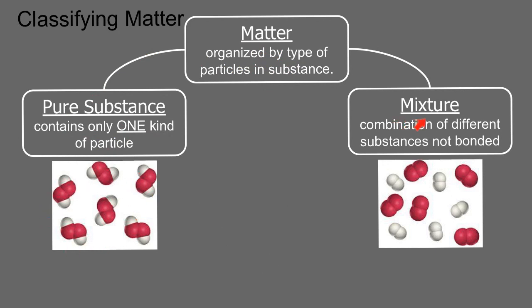The other thing would be a mixture. A mixture would be a combination of different substances not bonded together. So we can see here we have both the red particles as well as the white particles. Those two things are different things, and they're not bonded together. They're not joined together. And so that would be a mixture that we see here.